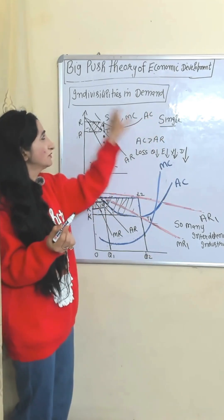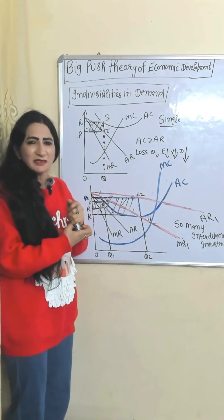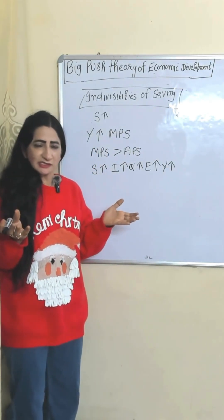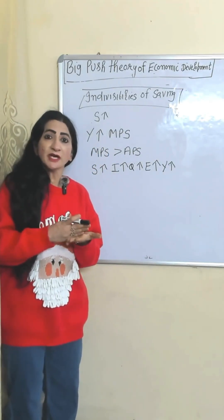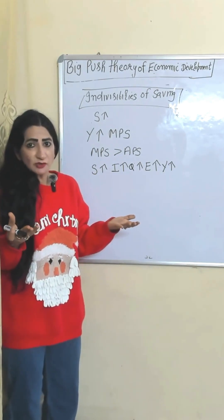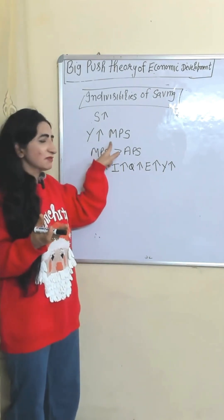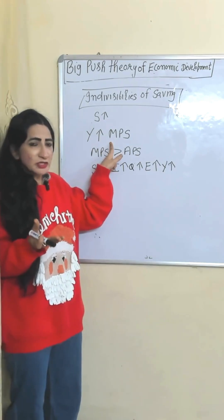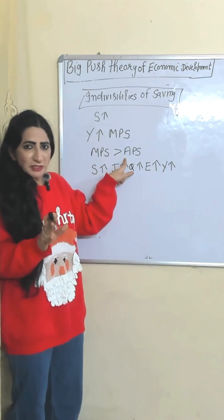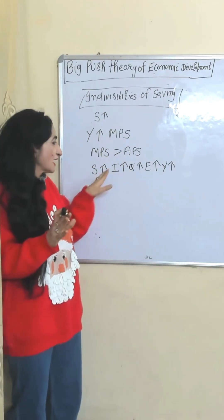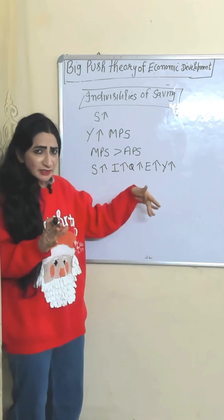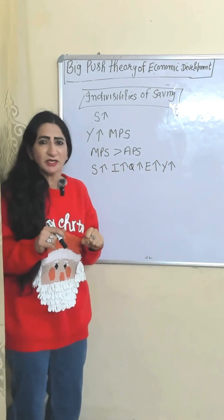According to indivisibilities of demand, next is indivisibilities of saving. We need a big push in the form of large investment, and investment depends on saving. As income increases, the marginal propensity to save also increases, and the marginal propensity to save should be more than the average propensity to save. As saving increases, investment increases; as investment increases, output increases, employment increases, income increases — and eventually the economy grows.